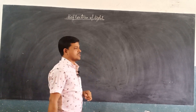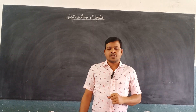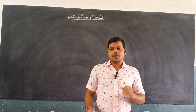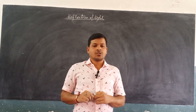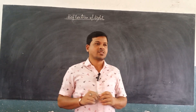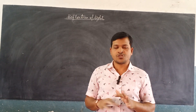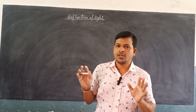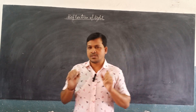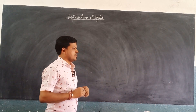In the previous class, we learned about the types of reflection of light: regular reflection and irregular reflection. Regular reflection occurs from a smooth polished surface, and irregular reflection occurs from an uneven or rough surface.